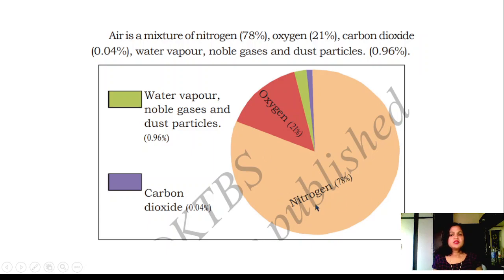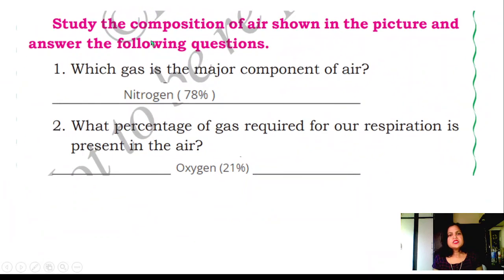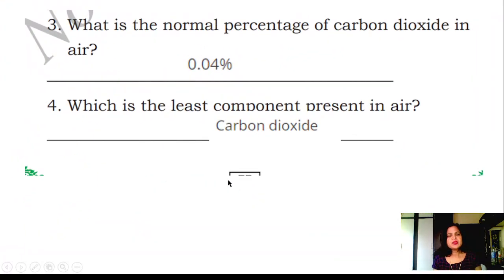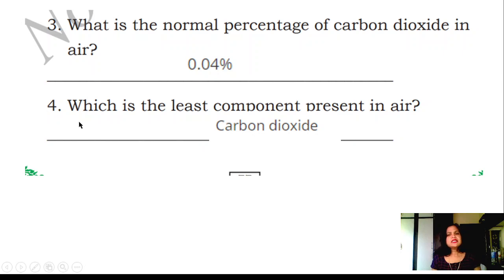Study the composition of air from the picture and answer the following questions. Which gas is the major component of air? Nitrogen, at 78%. What percentage of the gas required for respiration is present in the air? Oxygen, at 21%. What is the normal percentage of carbon dioxide in the air? 0.04%. What is the least component present in the air? Carbon dioxide.